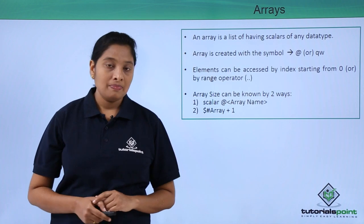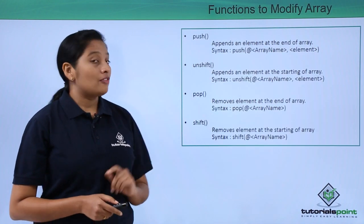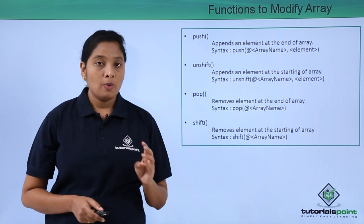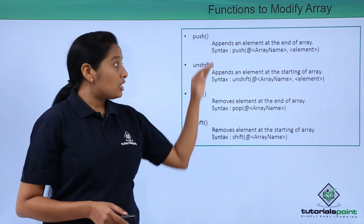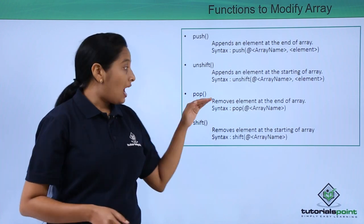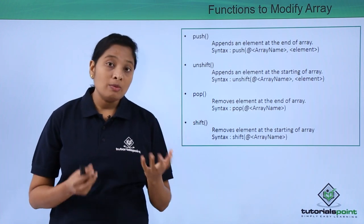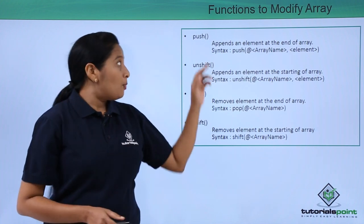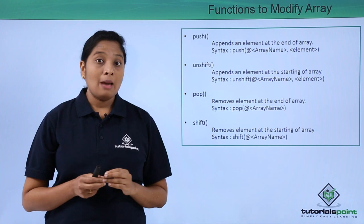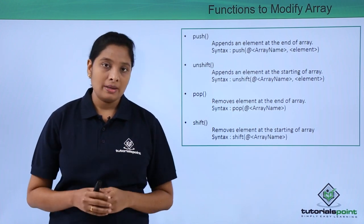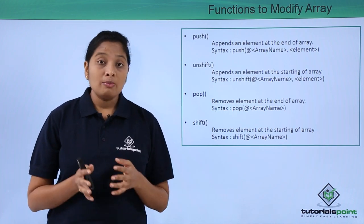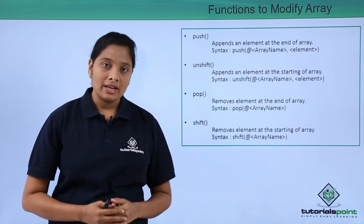Next, let's see the functions to modify an array. There are four functions: push, unshift, pop, and shift. The first two functions are to add elements in an array; the last two are to remove elements. Push appends an element at the end, unshift appends at the start, pop removes from the end, and shift removes from the beginning.